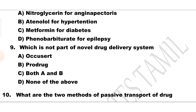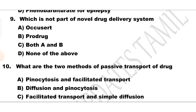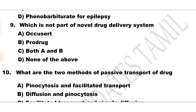Question number 9. Which is not part of a novel drug delivery system? Option A: Ocusert, Option B: Prodrug, Option C: Both A and B, Option D: None of the above.